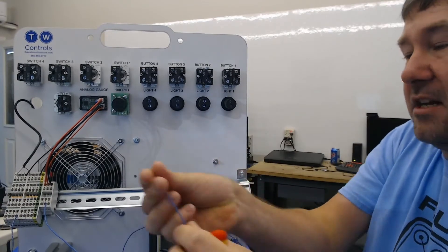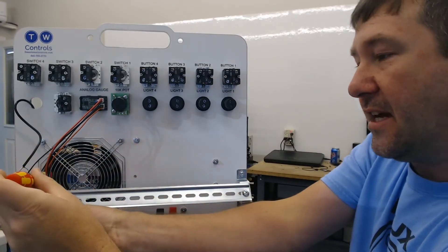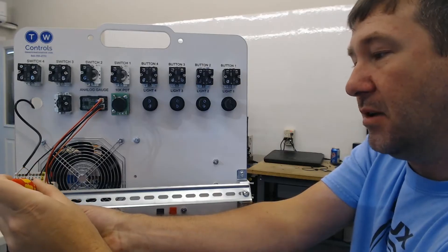Finally, we're going to go from the negative of our meter to the negative of our power supply, and that will complete our loop.